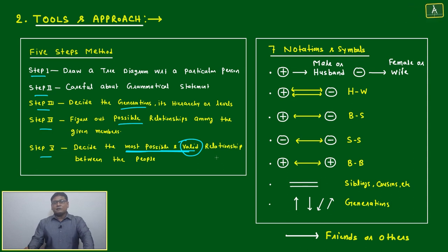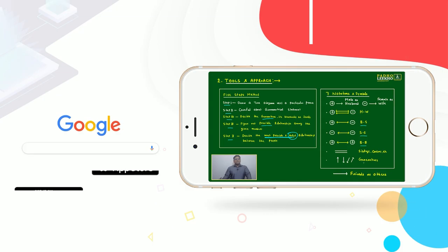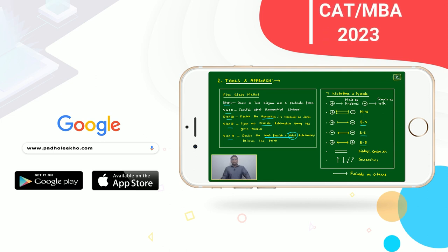We can't make new relations or generate new relations. These are the seven notations and symbols: This is male or husband, female or wife. Double-headed double arrow is husband-wife. Brother-sister, sister-sister, brother-brother, siblings, cousins. This is generation gap, either vertical upward, downward, or slant arrow. Horizontal arrow we can keep for friends or others.